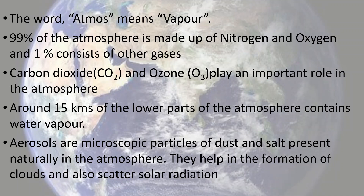Nitrogen and oxygen make up 99%, whereas only 1% are other gases. Out of that, carbon dioxide and ozone play a very important role. Carbon dioxide helps plant life to survive and is also responsible for global warming because it absorbs a lot of heat. Ozone protects our earth from the harmful effects of ultraviolet rays.